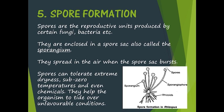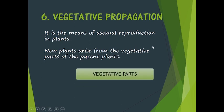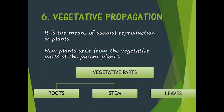That was spore formation, bringing us to the last topic — the sixth method of asexual reproduction. Vegetative propagation is a means of asexual reproduction in plants, where new organisms can arise from the vegetative parts of the plant. Vegetative parts are any parts that are not the reproductive parts. In plants, the flower is the reproductive organ — it contains the stamen and pistil. Apart from the flower, anything on the plant — roots, stem, and leaf — forms part of its vegetative parts.